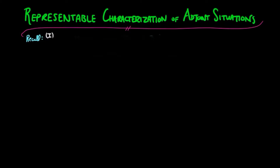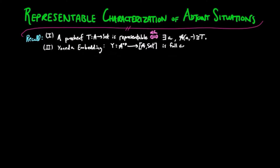We recall the following. First, a pre-sheave T is representable if and only if there exists some A object A and a natural isomorphism from the representable of A to T. Second, the UNEDA embedding, which takes an A object to its representable, is full and faithful.